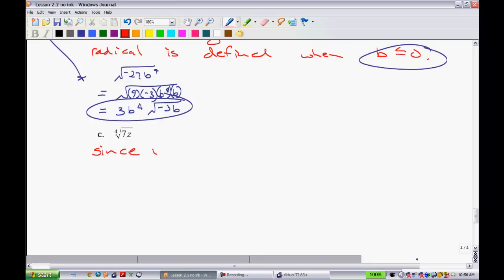Since we have an even index, the radicand must be positive. Whenever that's even, it must be positive. You've really got to remember that. So what do we know about that? Well, that means that z must be greater than or equal to 0. Now, they also want you to go ahead and simplify this.